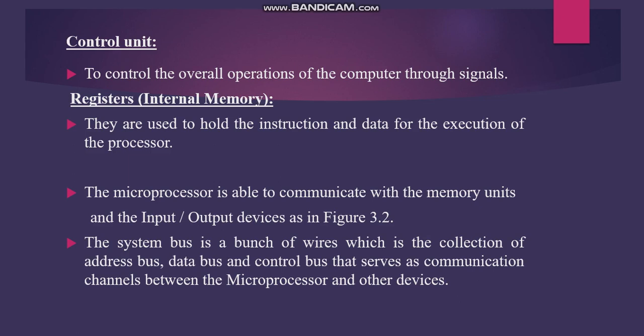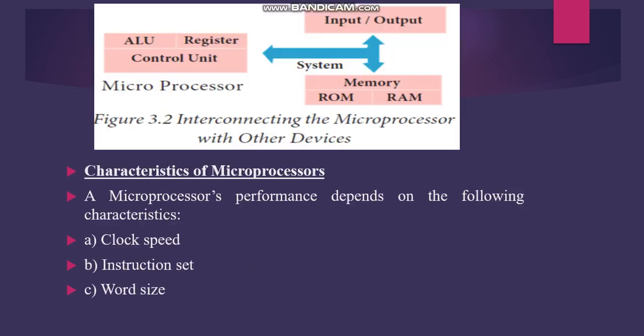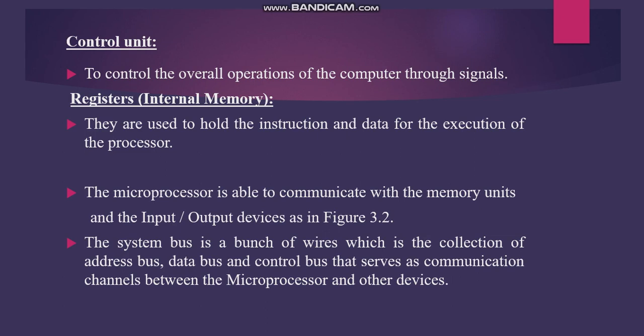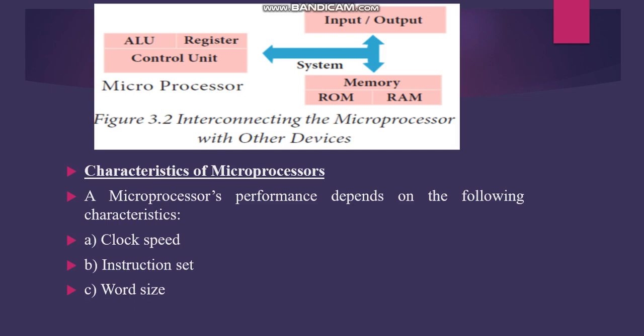When other devices in the computer system need to communicate with the microprocessor, they use the system bus. The system bus is a collection of wires consisting of the address bus, data bus, and control bus. This acts as a channel between the microprocessor and other devices.